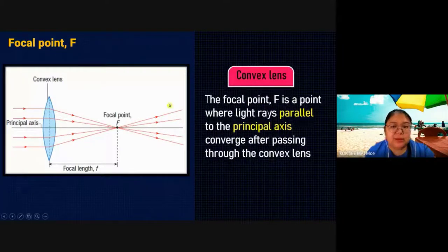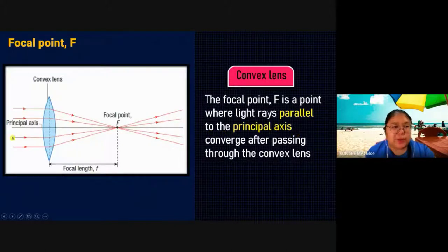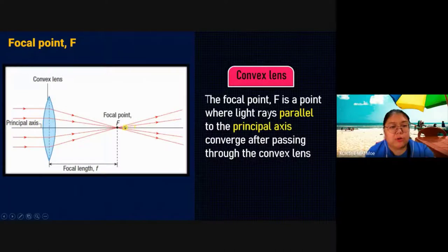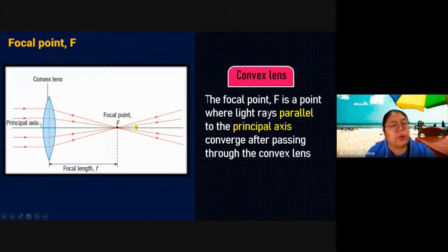This is a convex lens. The focal point is a point where light rays parallel to the principal axis, after passing through the convex lens, will converge — they convert into the focal point. So this is our first introduction to the focal point.